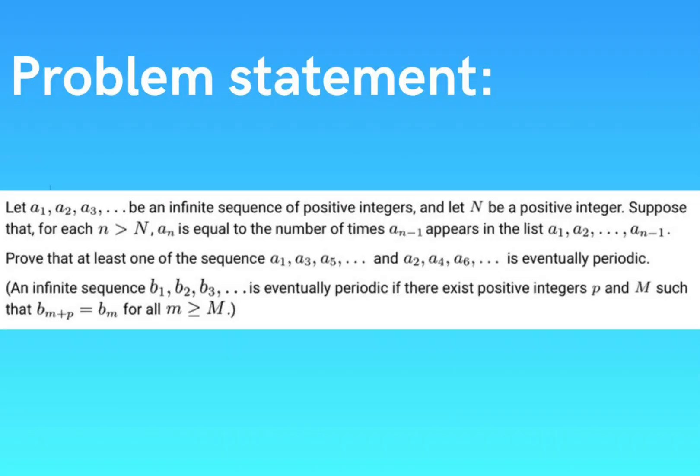The problem states that, let A1, A2, A3, and so on be an infinite sequence of positive integers. And let N be a positive integer. I am going to change the variable name a bit. Suppose that for each k larger than N, A_k is equal to the number of times that A_{k-1} appears in the list A1, A2 to A_{k-1}.